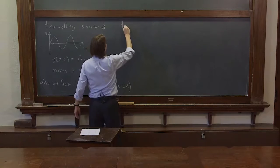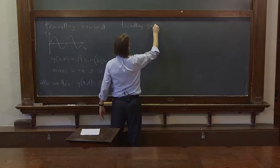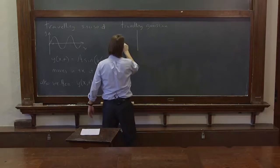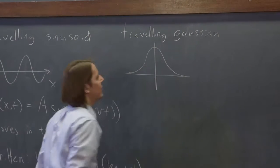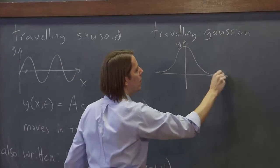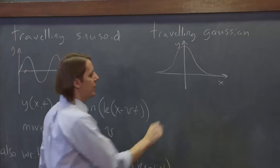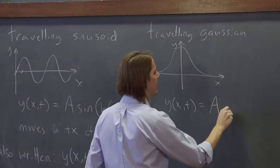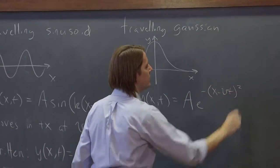Other waves can travel. You can have a traveling Gaussian pulse. So if you have your Gaussian that you know and love and think about here at the origin, something like that. And you've plotted it, y versus x, and you want to make it travel, you can say y of x and t is a e to the minus x minus vt squared.